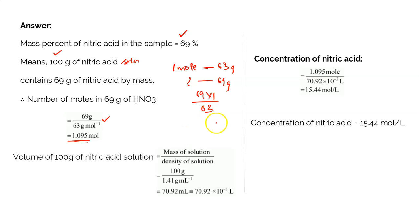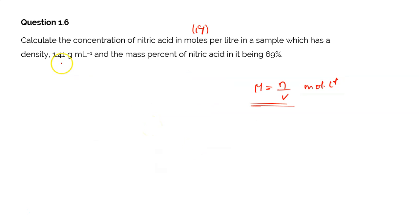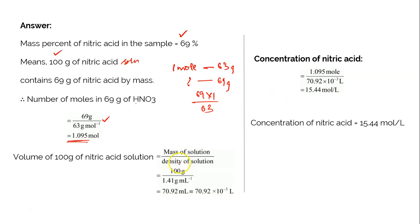Next we need to know the volume of the nitric acid solution so that we can substitute it in the formula of molarity. Volume can be calculated from density. In the question it is given that the density is 1.41 grams per ml. Since density equals mass by volume, you can find volume from mass divided by density. You know the mass and you know the density, so substitute both.